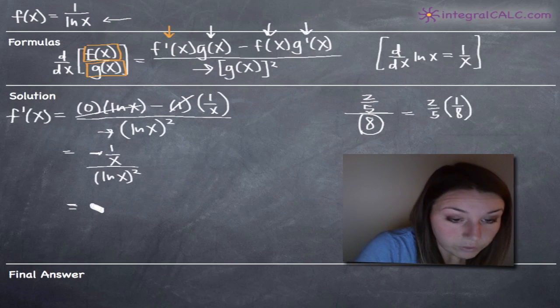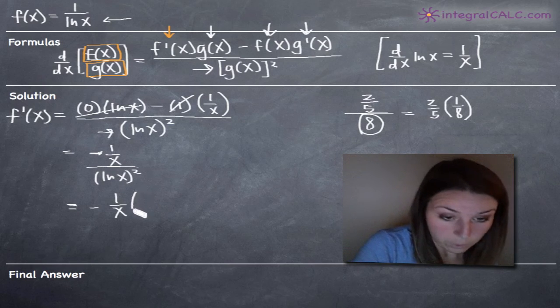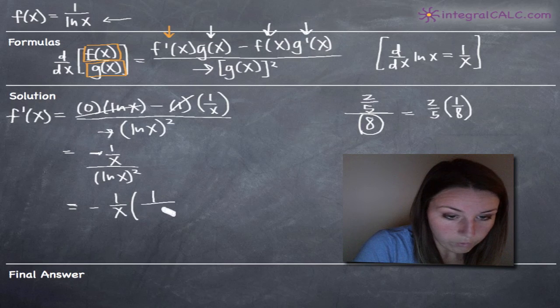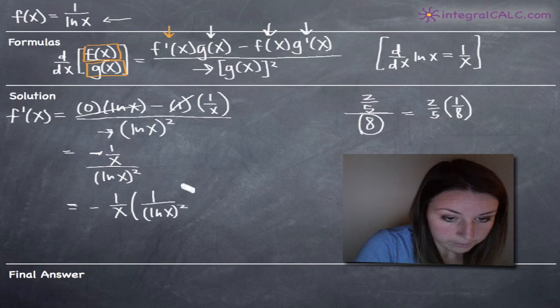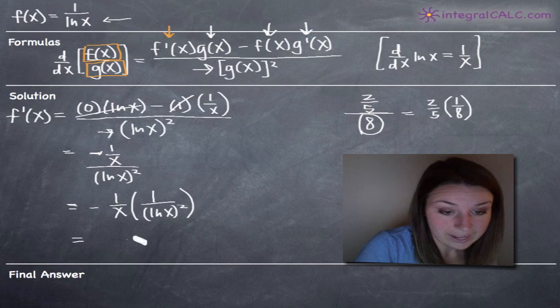So in our case, we can do negative 1 over x and then instead of dividing by ln of x squared, we will multiply by 1 over ln of x squared. This allows us to see how we're going to simplify this a lot easier.